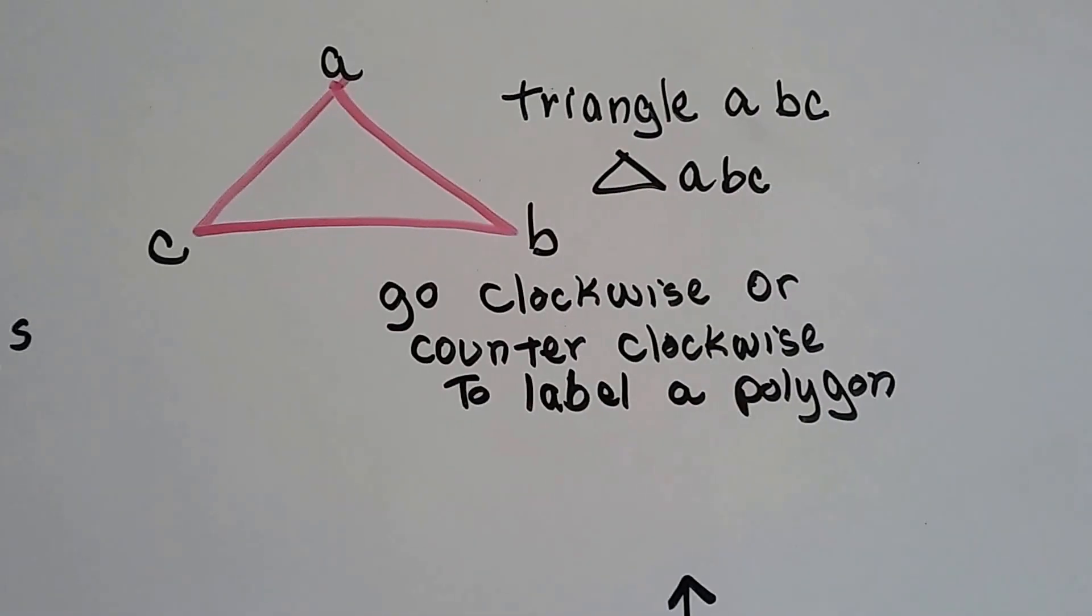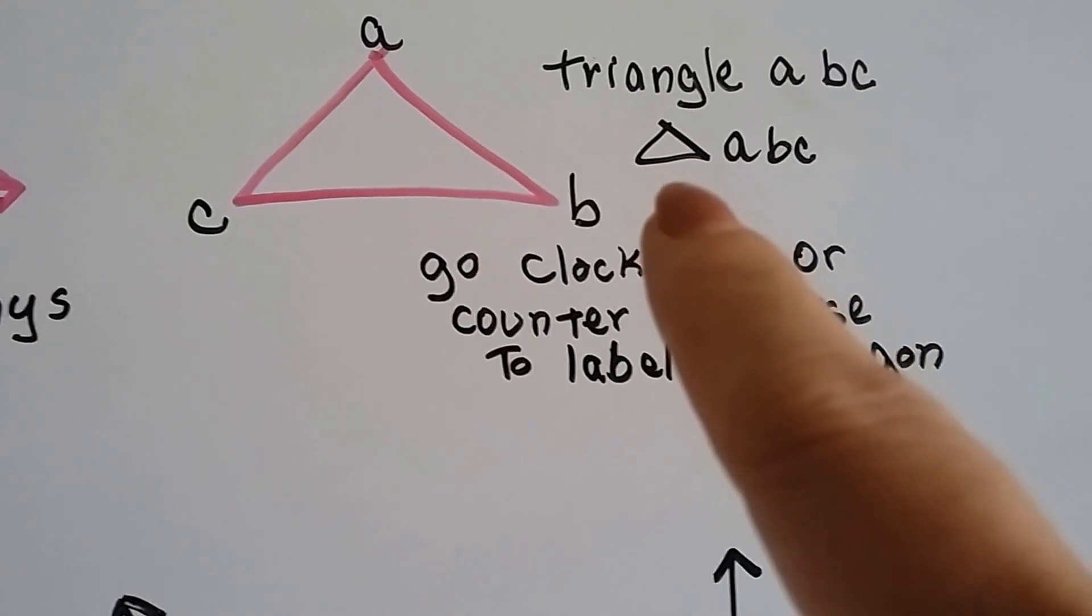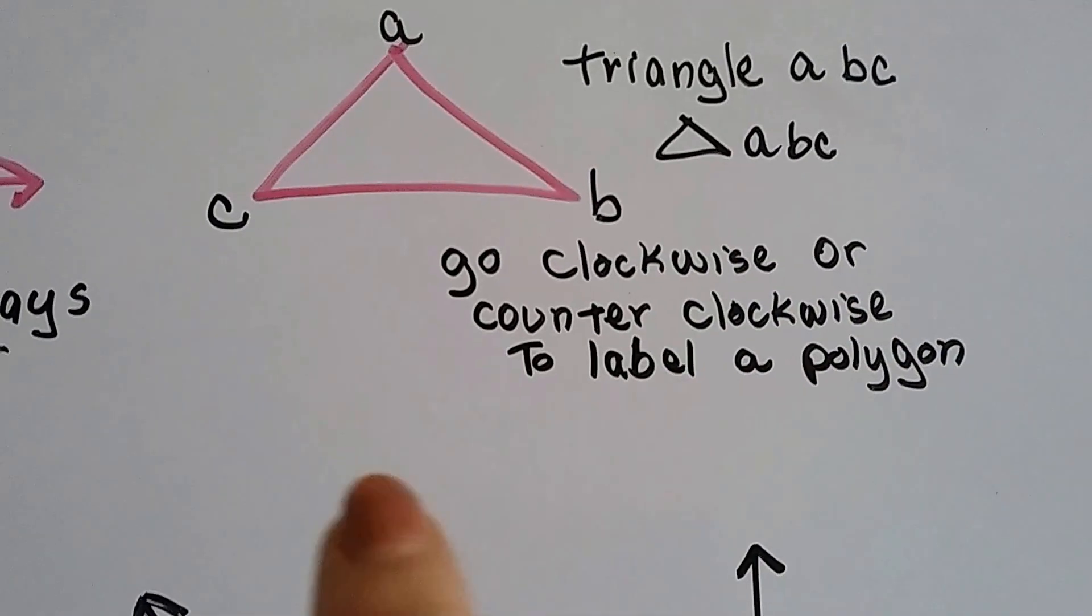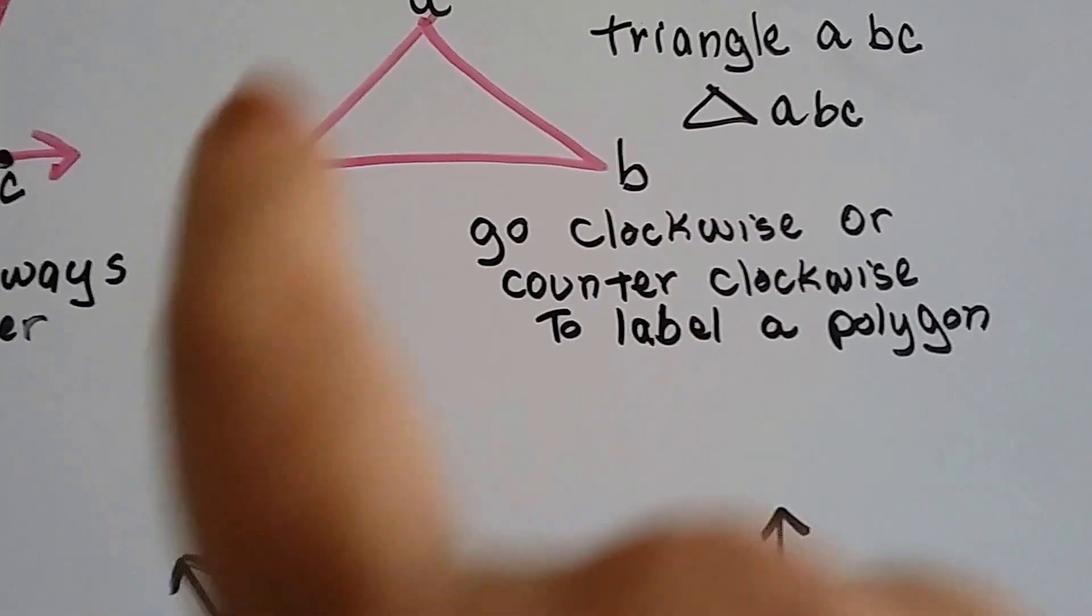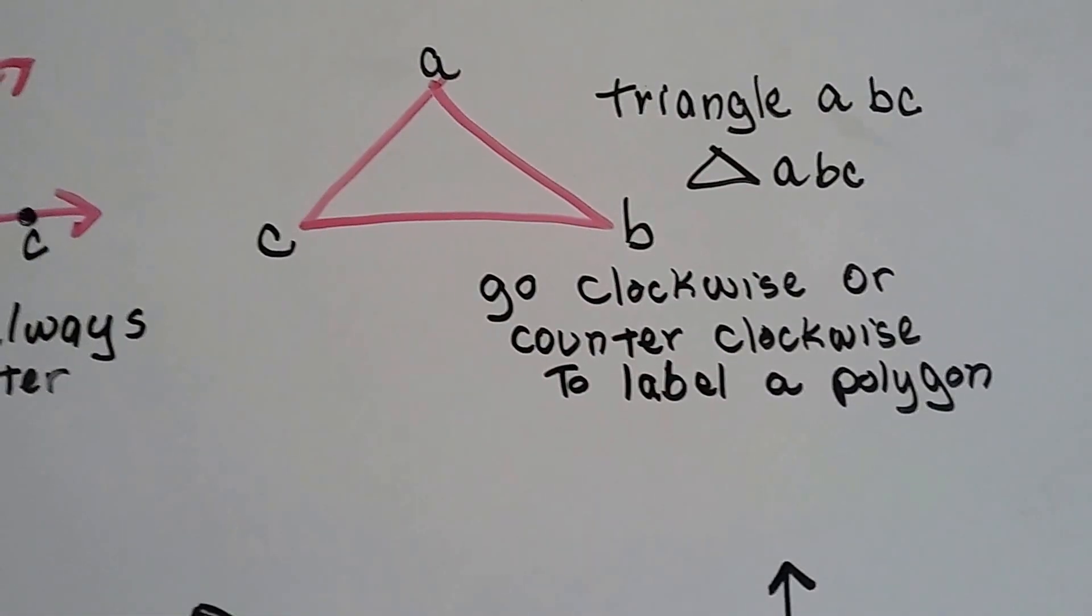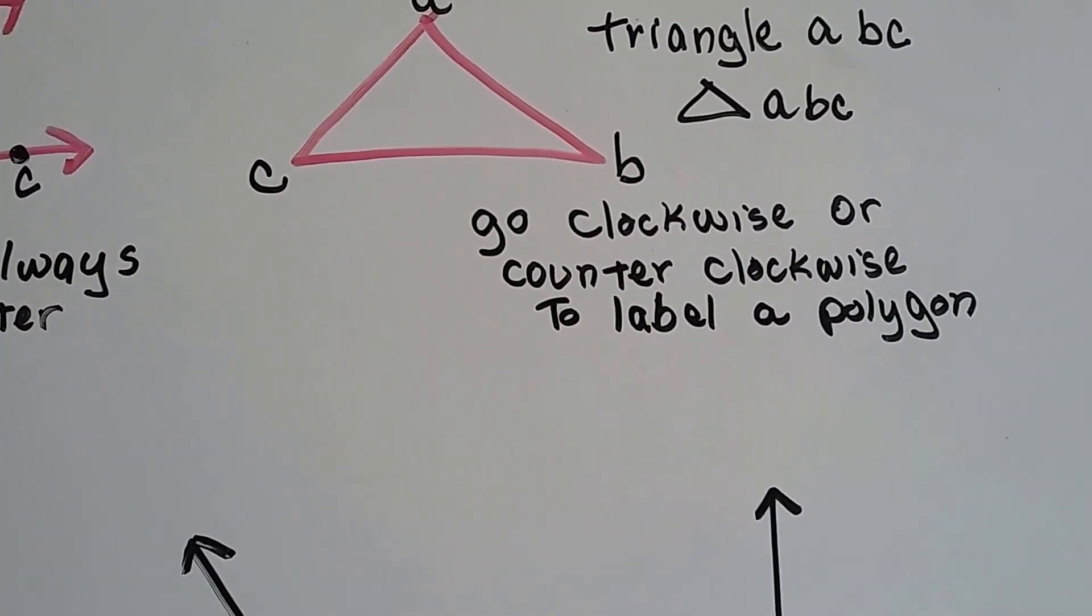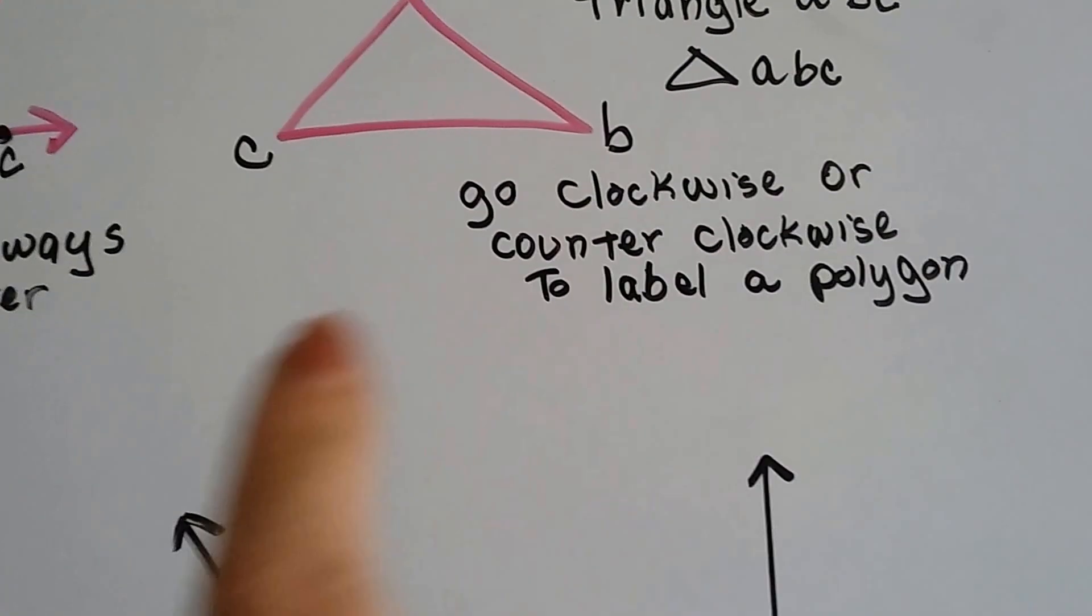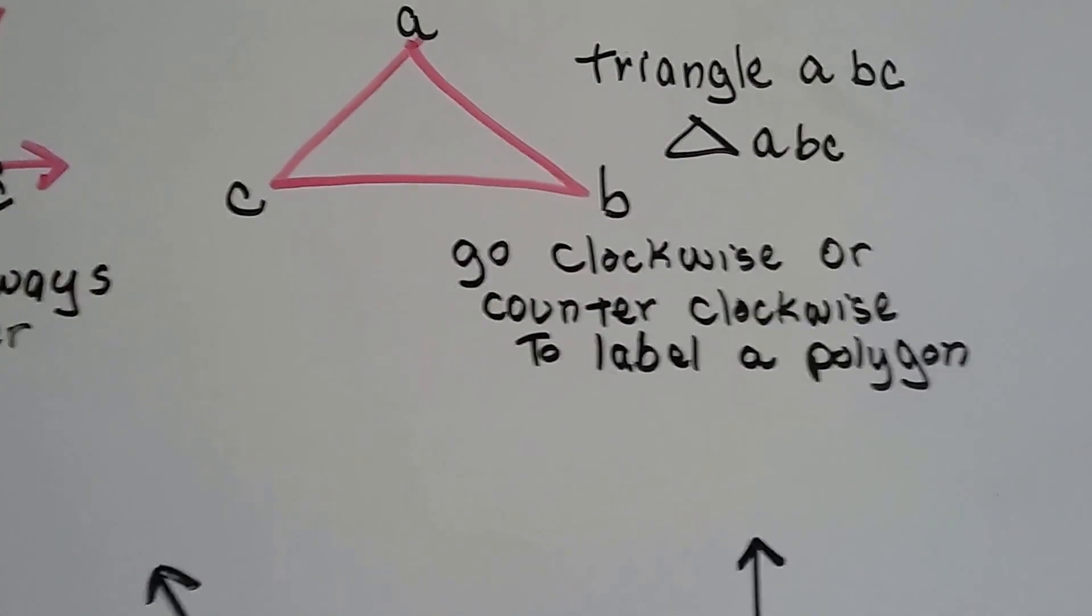This is triangle ABC, and it could be written as a little triangle symbol, triangle ABC. When we label it, we go clockwise, ABC, or we could go counterclockwise, ABC that way. As long as we keep going in the same direction, it doesn't matter if we go clockwise or counterclockwise, and that's good for any polygon.